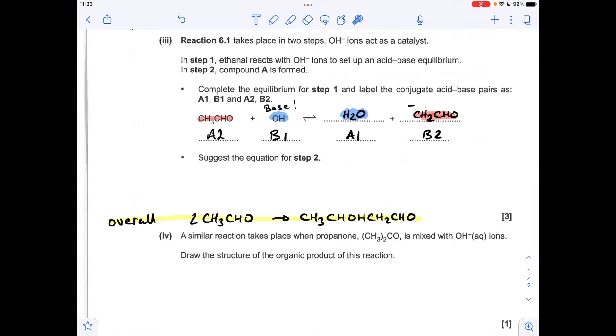So moving on to the second part of part 3, we've got to come up with the equation for step 2. So I've written up the overall equation. Basically, when we add steps 1 and 2 together, we need to generate the overall equation. So the first thing we can see is that we're going to need another mole of CH3CHO. We've only got one in step 1, but there's two in the overall equation.